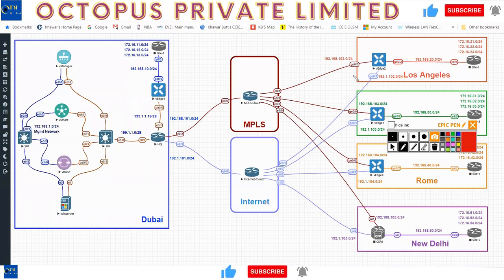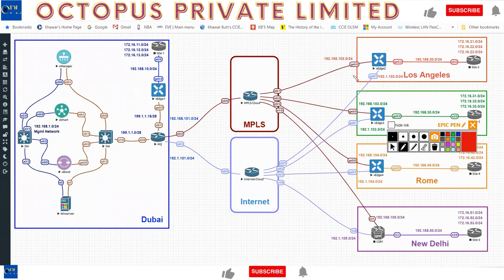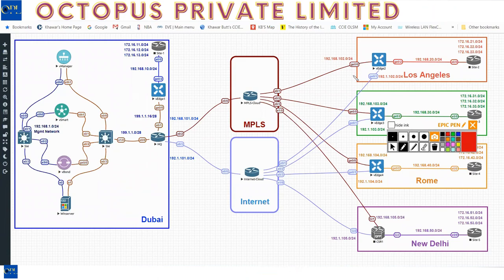The nbar engine is built into the vEdge to allow application-aware routing. This is a lot more than DMVPN — you cannot even imagine doing these types of things in DMVPN. There are other vendors with a similar architecture, though not many.